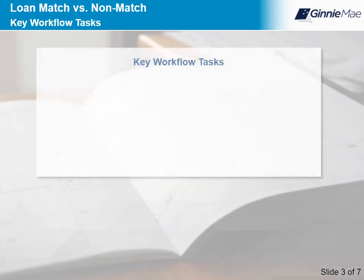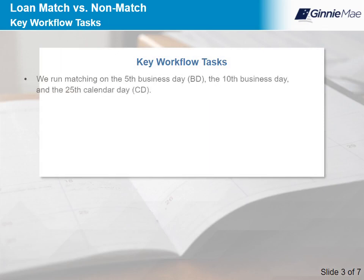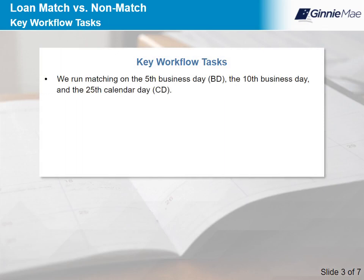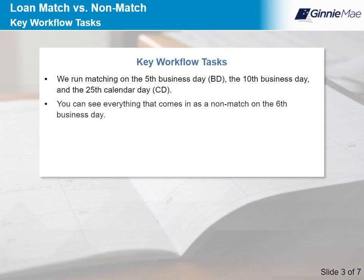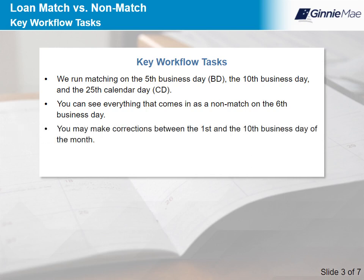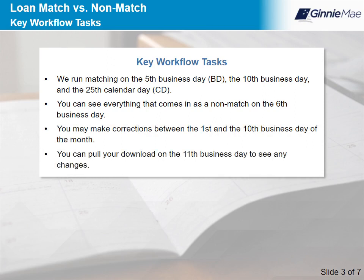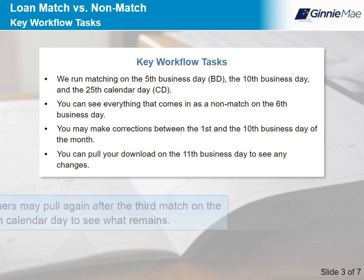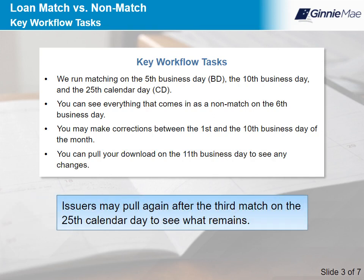Let's now discuss key workflow tasks. We run matching on the 5th business day (BD), the 10th business day, and the 25th calendar day (CD). You can see everything that comes in as a non-match on the 6th business day. You may make corrections between the 1st and the 10th business day of the month. You can pull your download on the 11th business day to see any changes. Note that issuers may pull again after the 3rd match on the 25th calendar day to see what remains.